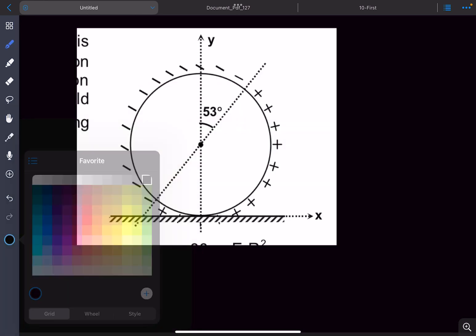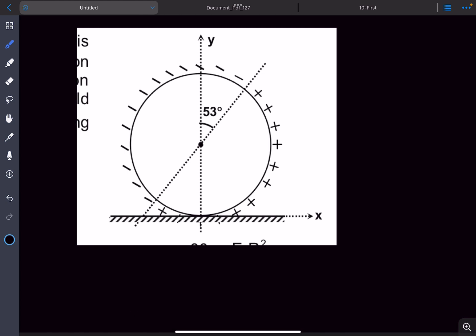To draw the FBD of the sphere, we replace the negative charge distribution with a point charge of magnitude -σA at a distance R/2 from the vertex.